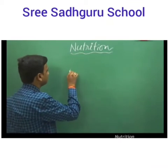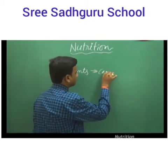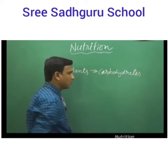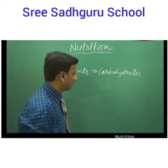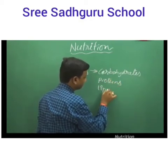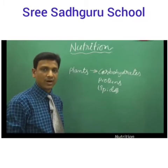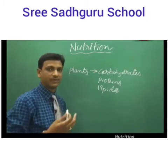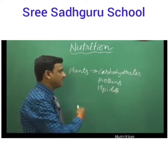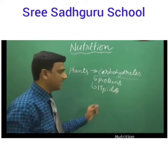In autotrophic mode of nutrition, plants produce molecules like carbohydrates. Along with carbohydrates, they also produce certain substances called proteins and lipids. These are useful biochemicals. Other organisms — in heterotrophic mode of nutrition — are dependent on plants for their food. So we get carbohydrates, proteins, and lipids from plants; plants basically make all three.